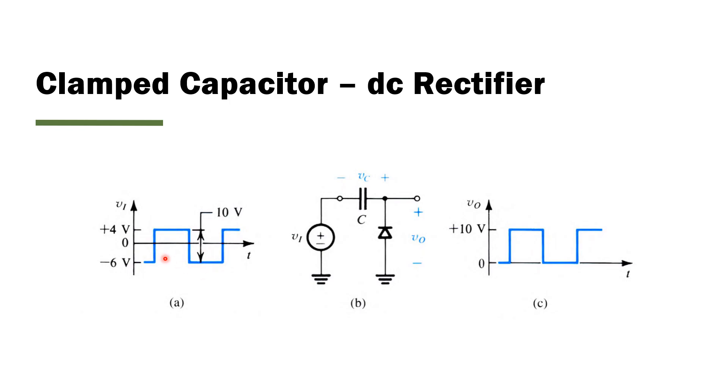We get a negative 6 volt to 4 volt square wave, so the difference is 10 volts. And interestingly, what we observe at the output is because of the capacitor's charging characteristics, we only get a positive output voltage. So this is showcasing a common diode usage called DC rectification, or a DC rectifier.